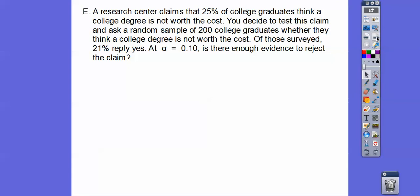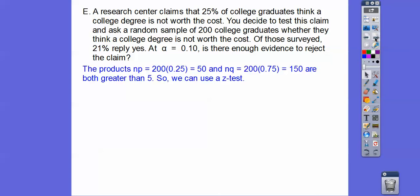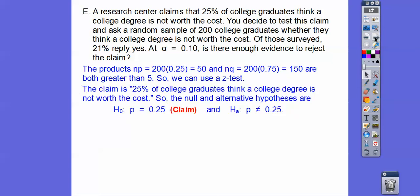A research center claims that 25% of college graduates think that a college degree is not worth the cost. You decide to test this claim and ask a random sample of 200 college graduates whether they think a college degree is not worth the cost. Of those surveyed, 21% replied yes. At the 10% level, is there enough evidence to reject this claim? Both NP and NQ are greater than or equal to 5. The claim is 25%, so that's our null hypothesis. This is a two-tailed test because our alternative is not equal to 25%.